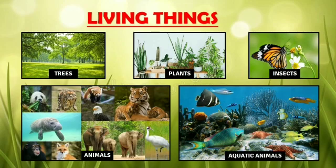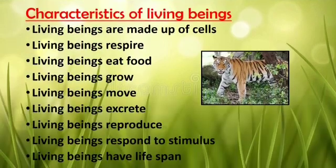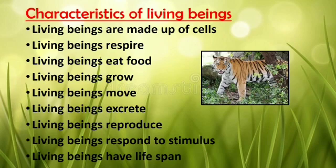In this chapter we will be studying about living things. Plants and animals are living beings. There are certain characteristics to decide them as living beings. Living beings are made up of cells; living beings respire; living beings eat food; living beings grow; living beings move; living beings excrete; living beings reproduce; living beings respond to stimulus; living beings have a lifespan.